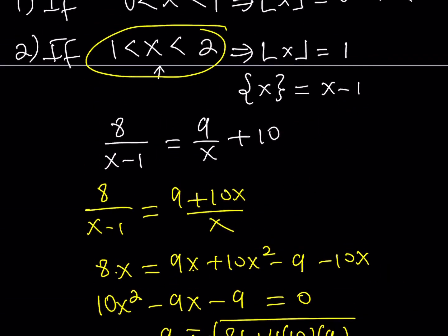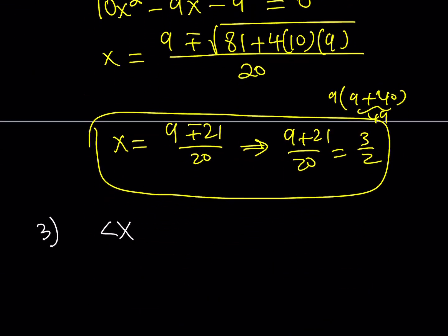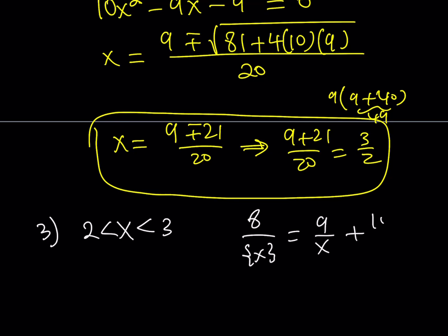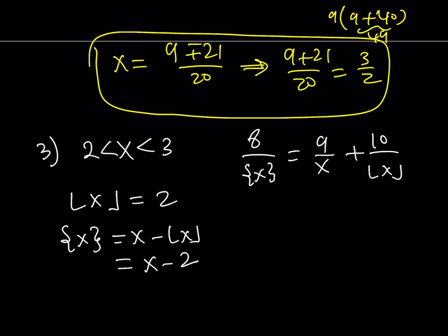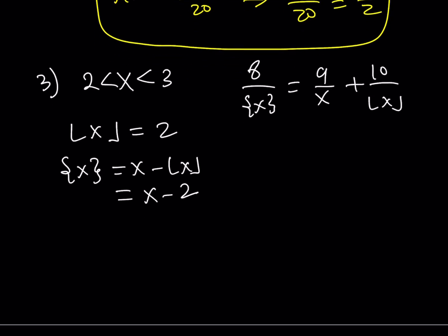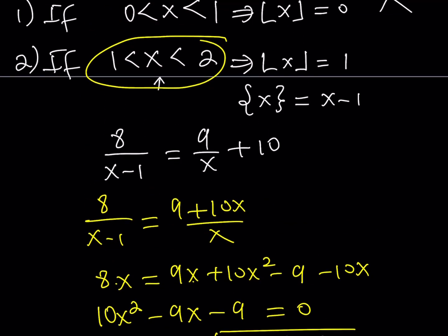Case 3: x is between 2 and 3. Our original equation is 8 over the fractional part of x equals 9 over x plus 10 over the floor value of x. If x is between 2 and 3, its floor value is 2, and its fractional part is x minus 2. So the equation becomes: 8 over (x minus 2) equals 9 over x plus 10 over 2, giving us 8 over (x minus 2) equals (9 plus 5x) divided by x.